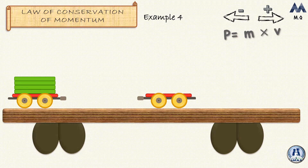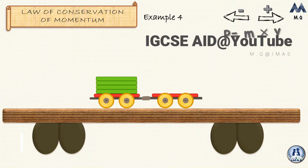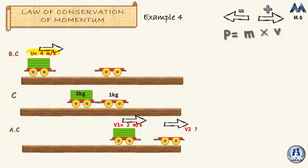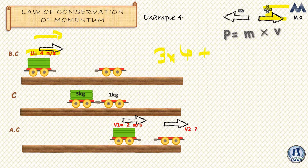One more final example. This time the first trolley moves toward the stationary other trolley, but after the collision they move separately. The heavier trolley had an initial velocity of 4 meters per second to the right — positive according to our standard — and the other object was stationary. The total momentum before the collision is 3 times 4 plus 0, which equals 12.